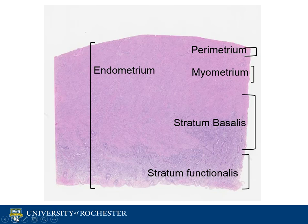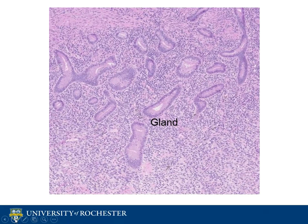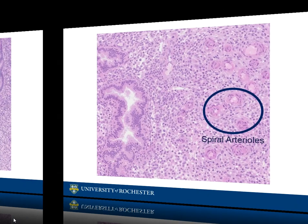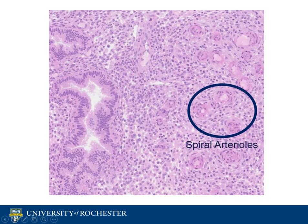Now on to a discussion about the phases of the endometrium — specifically the proliferative phase, secretory phase, and menstrual phase. In the proliferative phase, you can see the glands appear more or less circular or tubular. You also see mitotic figures in the stroma and in the epithelial lining.